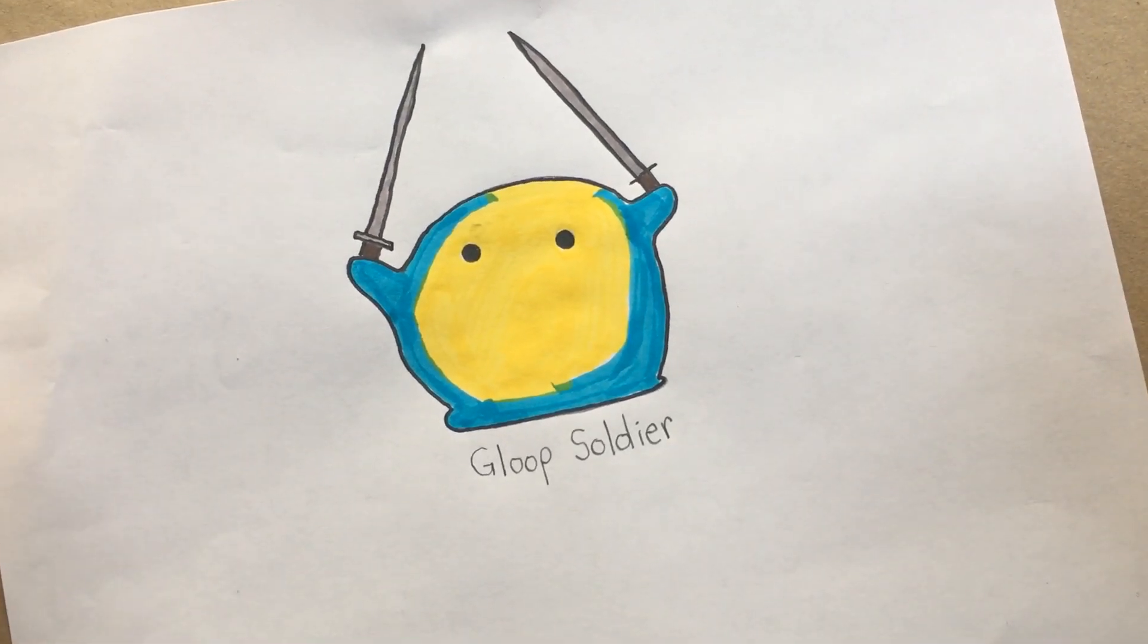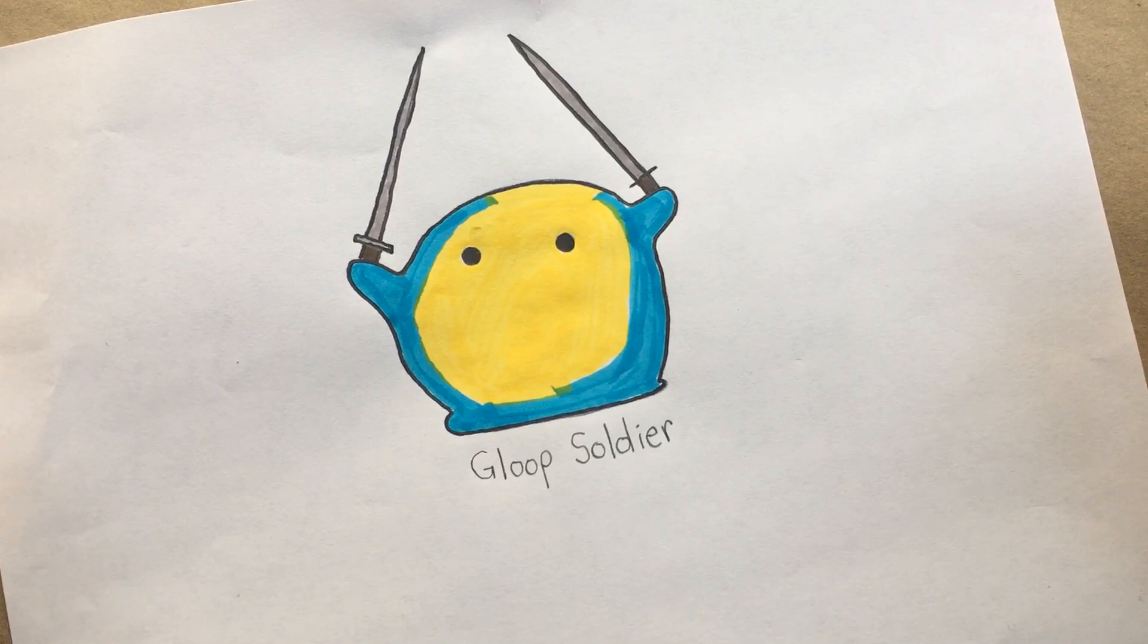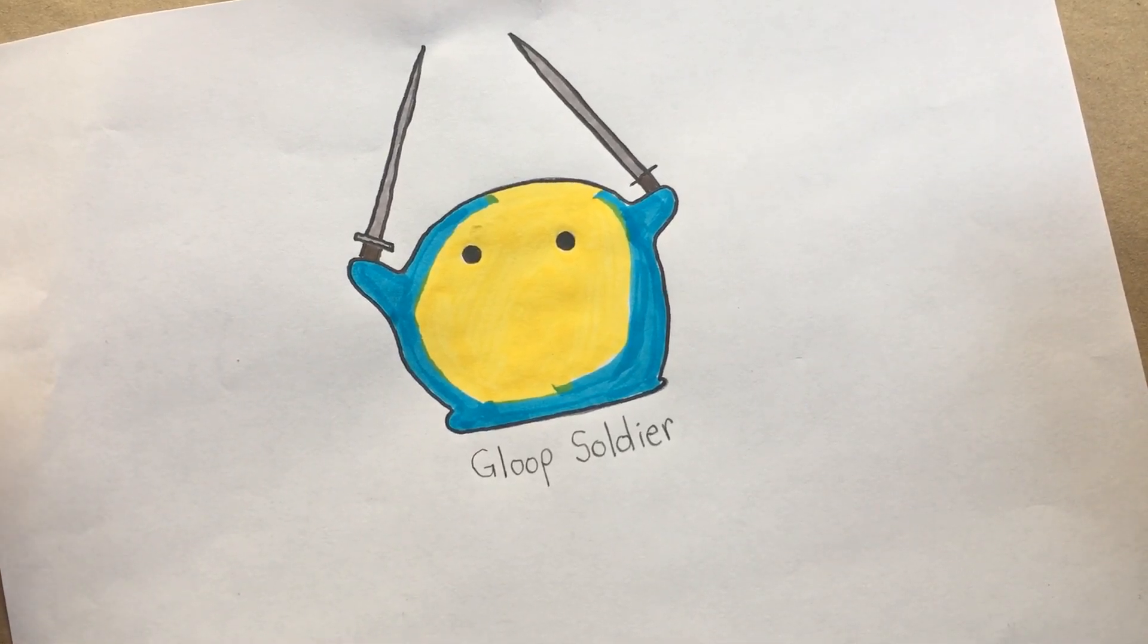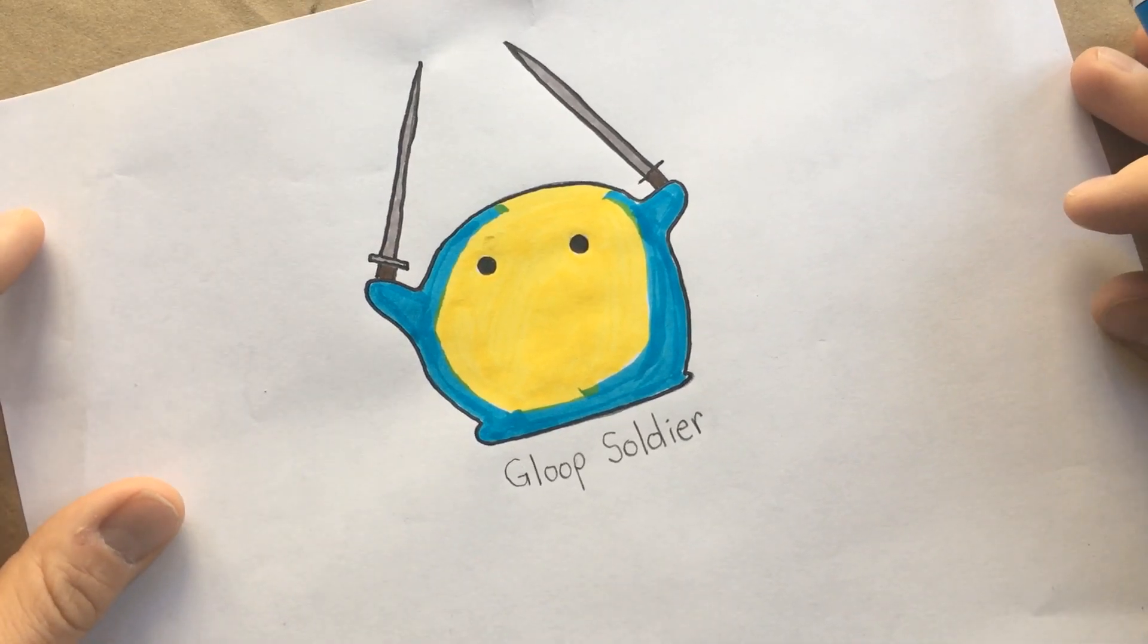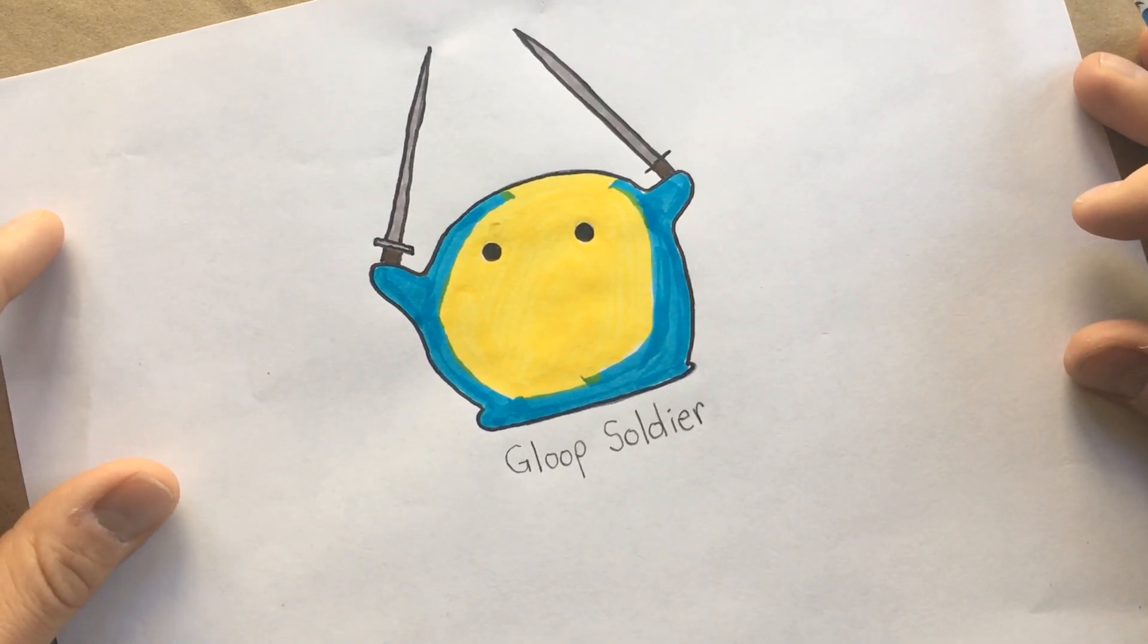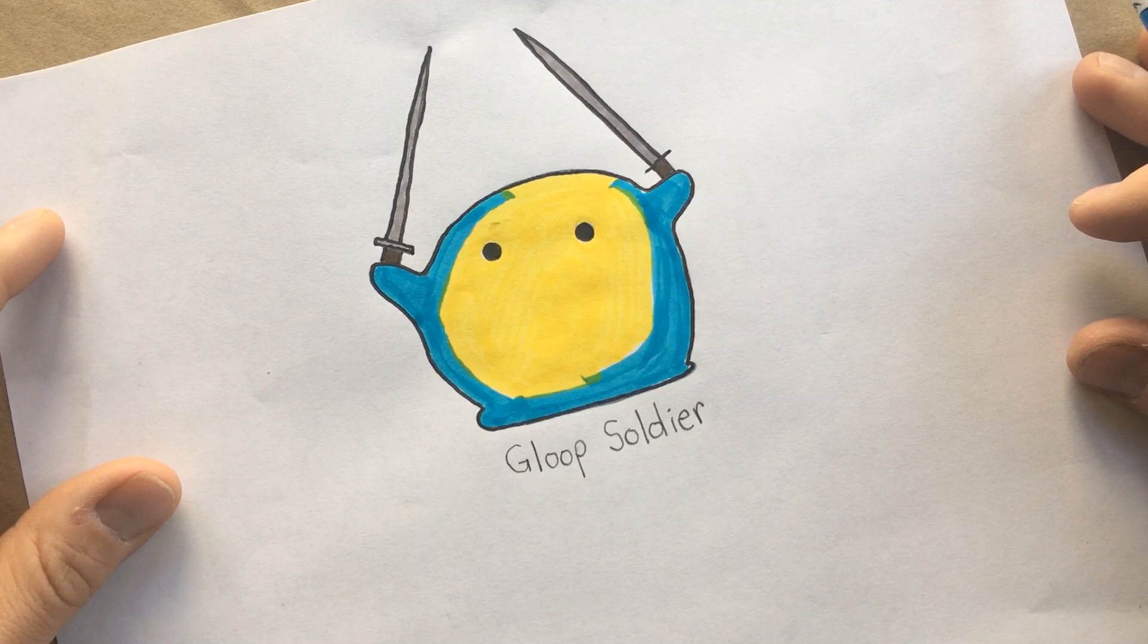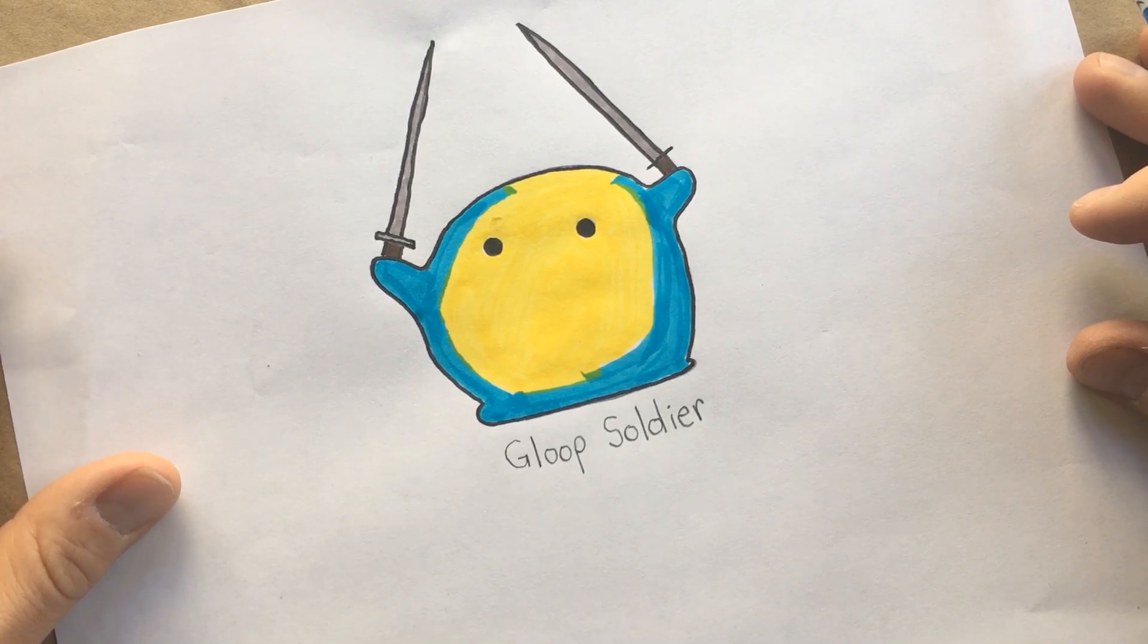Hello friends, this is Phil Bechtel from the Kid Stories Podcast. Today we're going to draw together. We're going to draw a gloop soldier. Gloop soldiers are a pretty new character, an enemy that we encountered in Ben's origin story. Him and his sister Stella had to escape the gloop army as they were taking over their entire island.